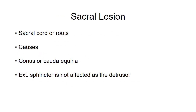Sacral level lesions are usually seen at the sacral cord or below. Usual causes are spinal cord injury, IVDP, tumors, AV malformation, and canal stenosis. The lesion can present as a conus lesion, cauda equina lesion, or a combined lesion. The external sphincter is usually not affected, even though the nerve supply is the same as the detrusor (S2-S4), because the detrusor nuclei are at the intermediolateral column whereas the pudendal nerve nuclei are at the lateral ventral gray matter. Additionally, the pudendal nerve sometimes has supply from S1.